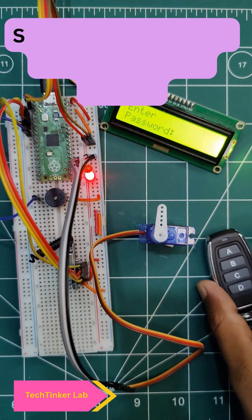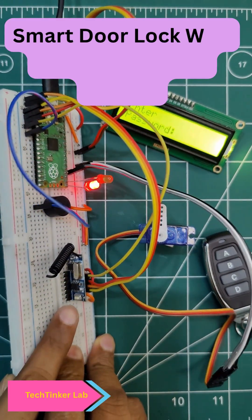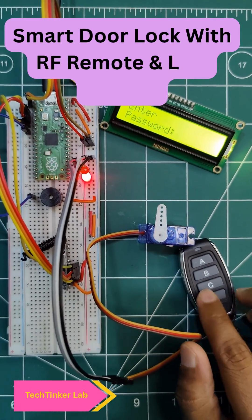Hello everyone, today I am showing you my RF control based door lock system. Here is the RF sensor, this is the RF receiver, and here we have the RF remote.